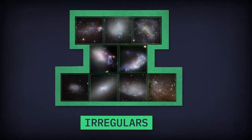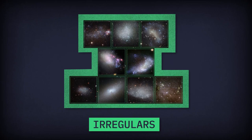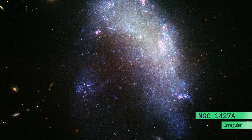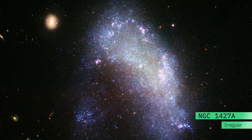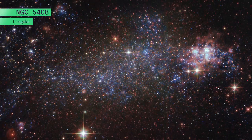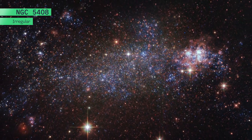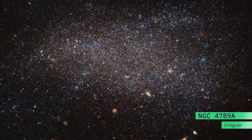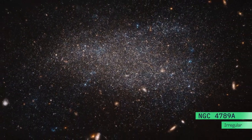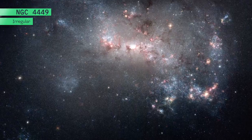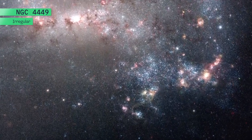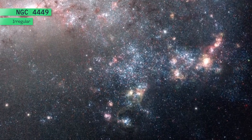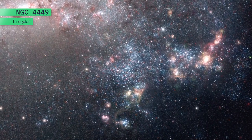Irregular galaxies don't fit into one of the other categories. They are shapeless and have no symmetry or ordered structure. Irregulars may hold old and young stars, and often have knots of gas and dust forming new stars.